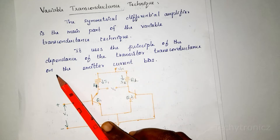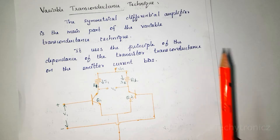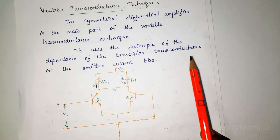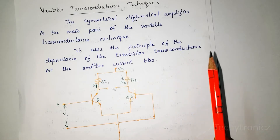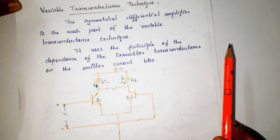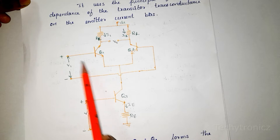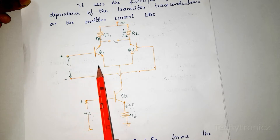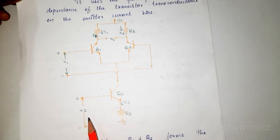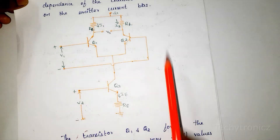The symmetrical differential amplifier is the main part of the variable transconductance technique. It uses the principle of dependence of the transistor transconductance on the emitter current bias — that is, it makes use of the dependence of the transistor transconductance parameter on the emitter current bias applied. Here the input voltage is V2, and in the differential amplifier the input voltage is V1.